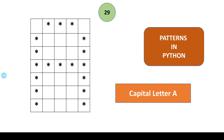Hello everyone and welcome back to my channel. In this video we are going to see a pattern — an asterisk pattern which is a capital letter A. Without wasting time, let us see how we can write a code to draw this pattern using Python.